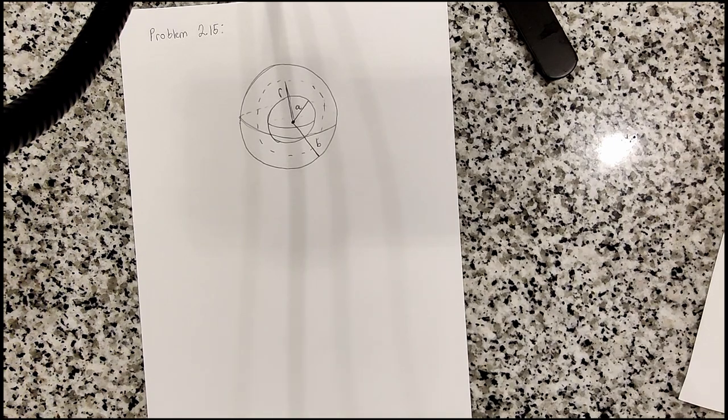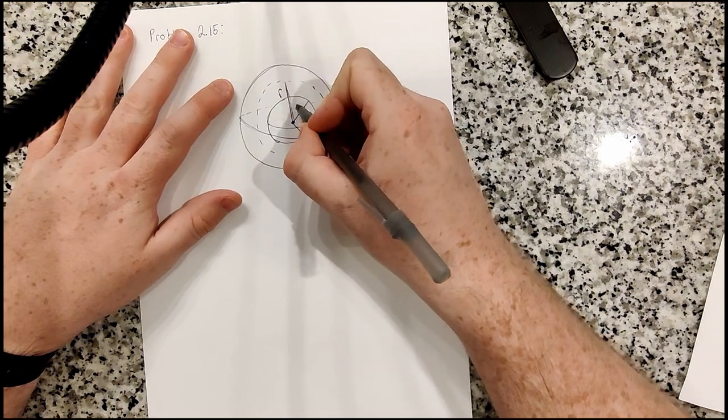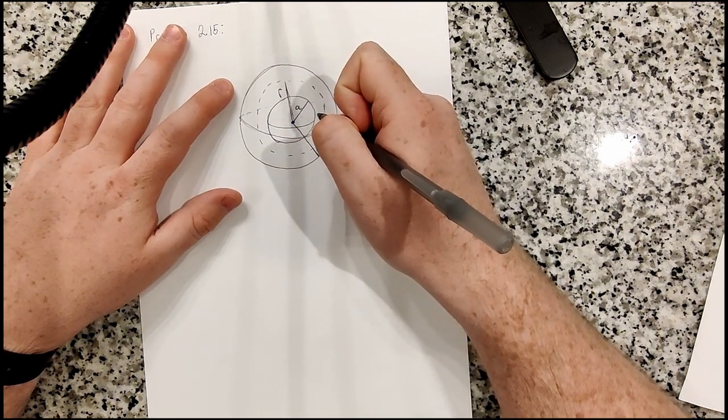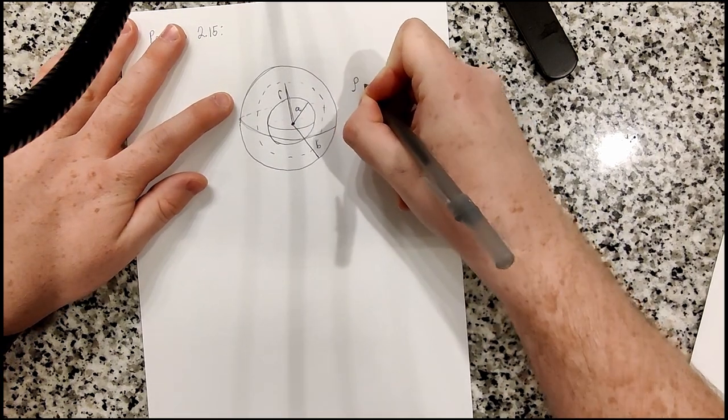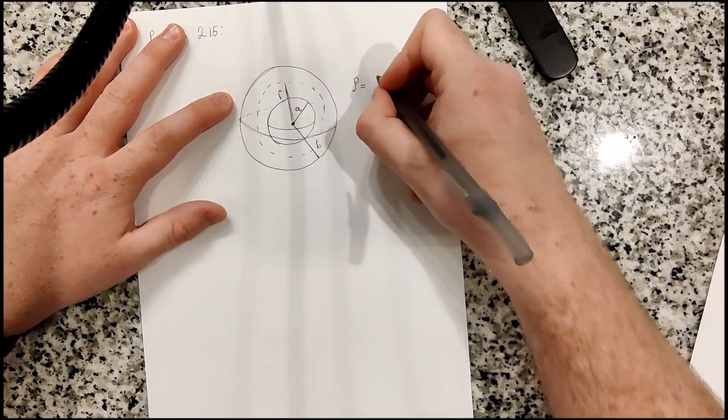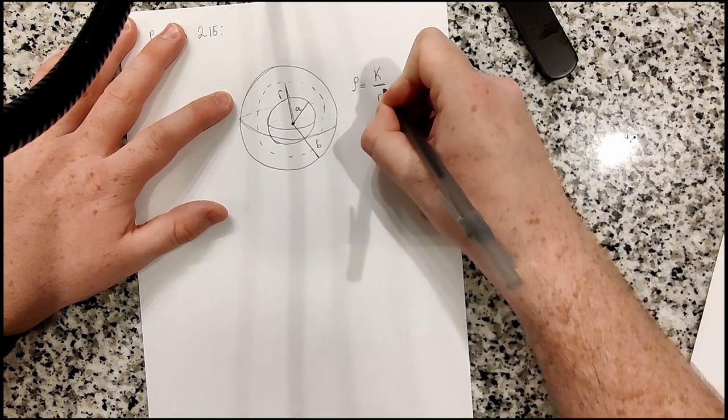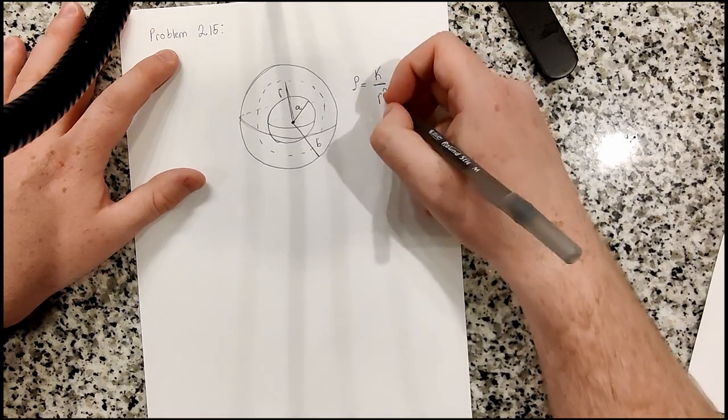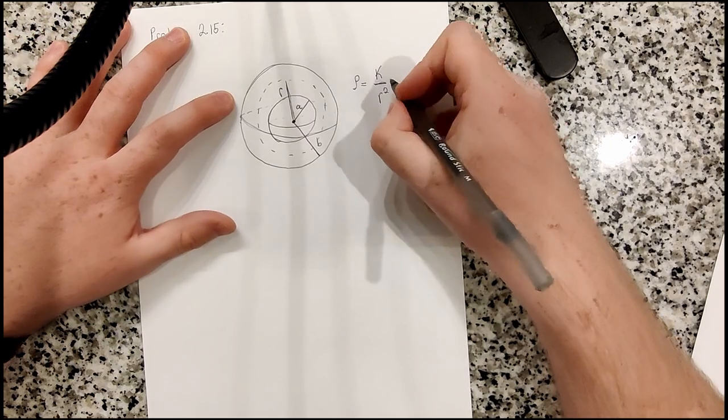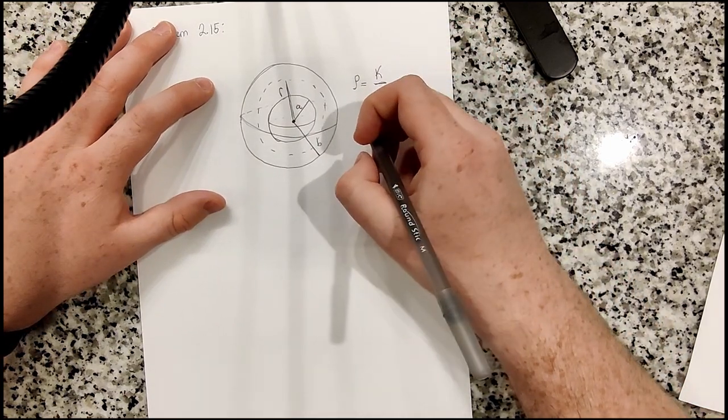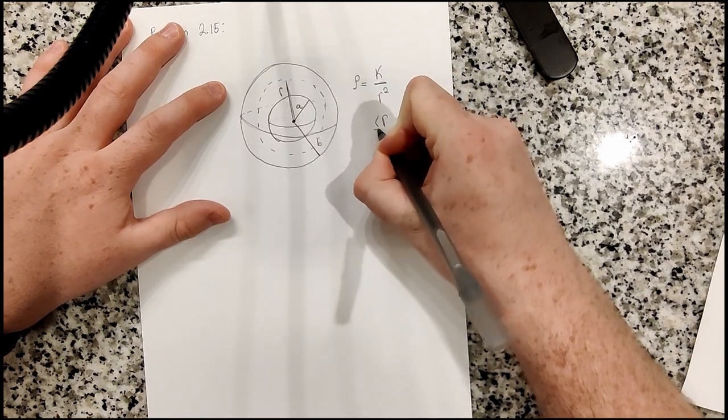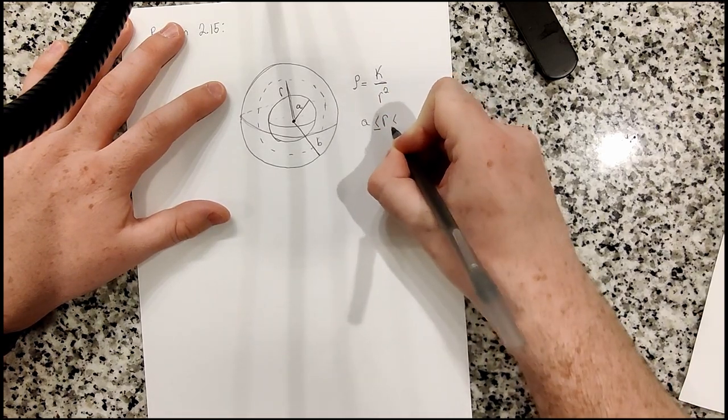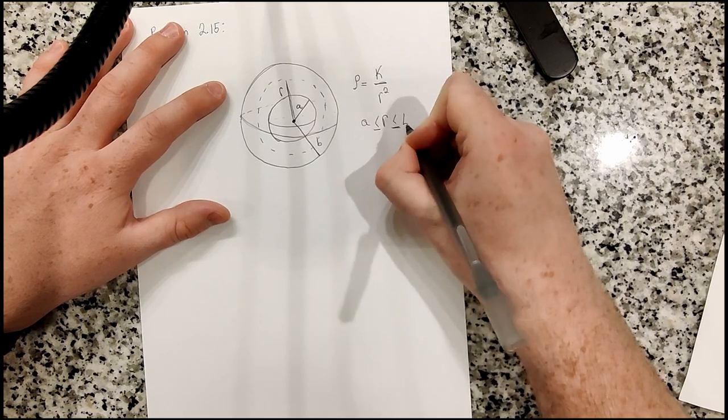But yeah, let's go ahead and just solve this problem. So the problem statement says that we have a thick spherical shell and it carries a charge density of rho, which is equal to k over r squared. So it depends on one over the radius squared, and r lies between greater than or equal to a, but less than or equal to b.